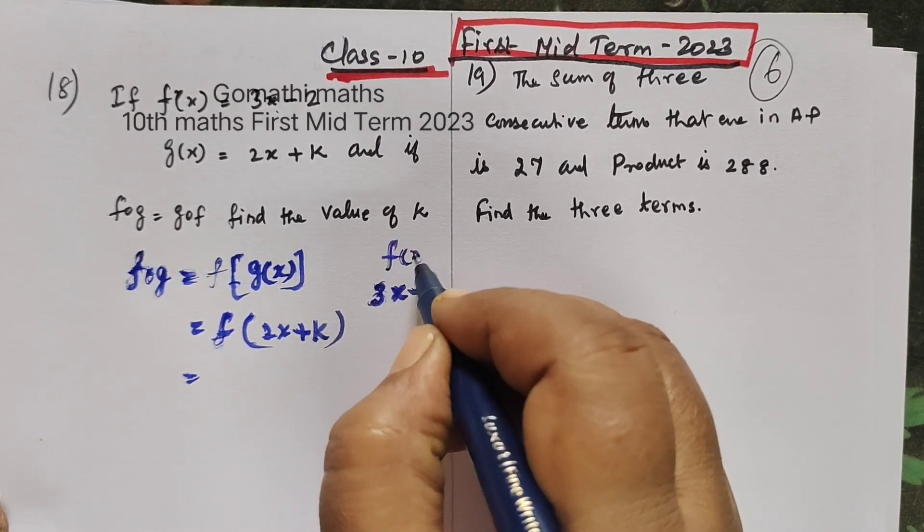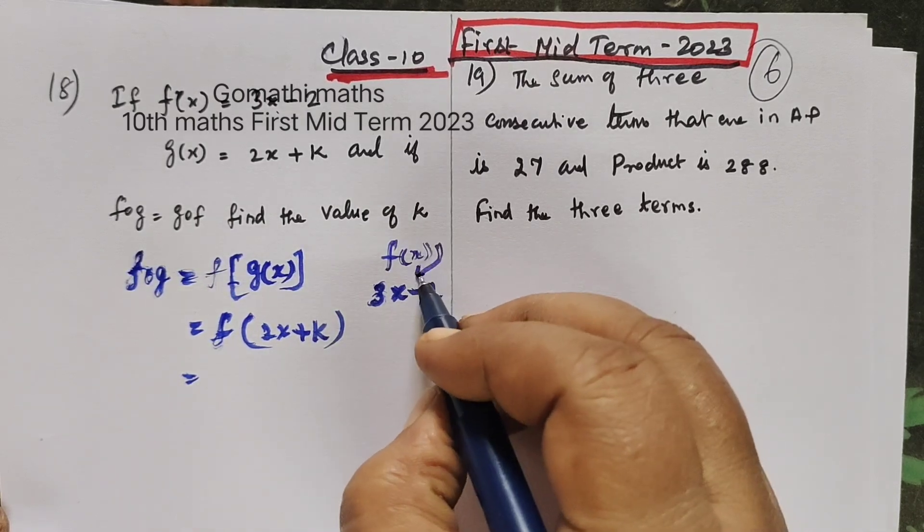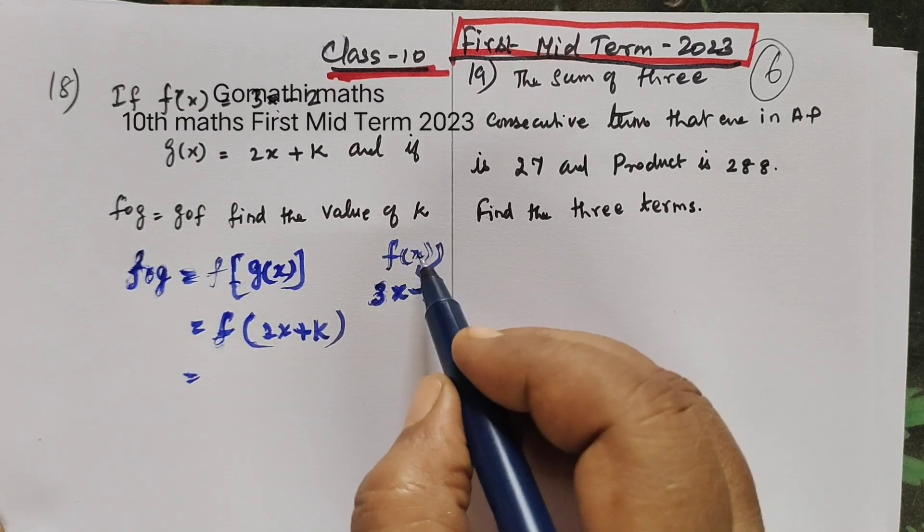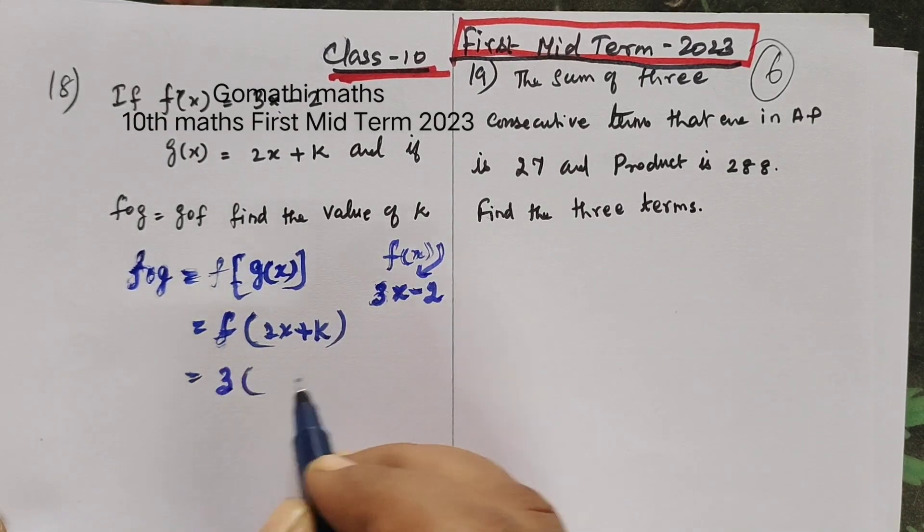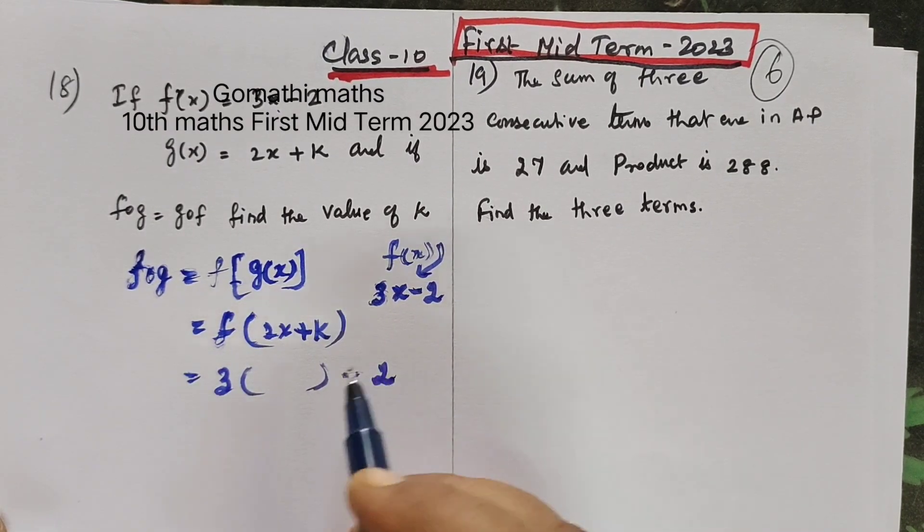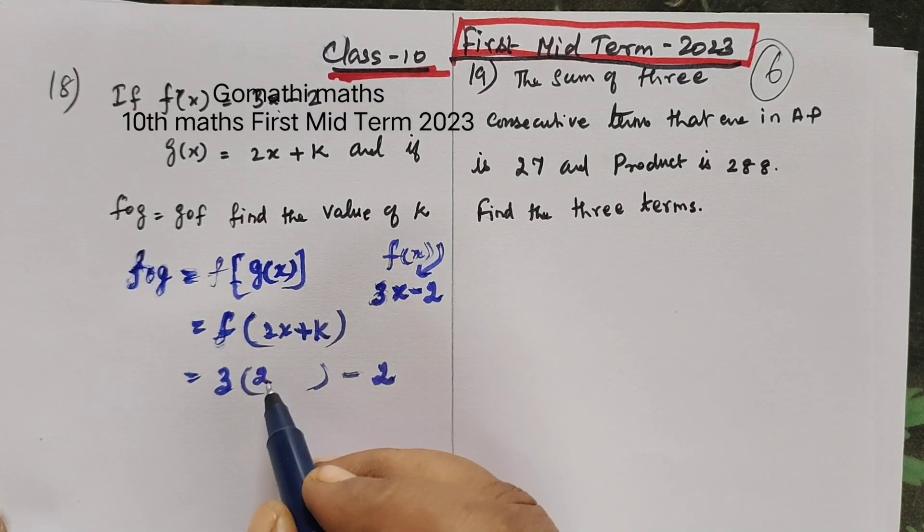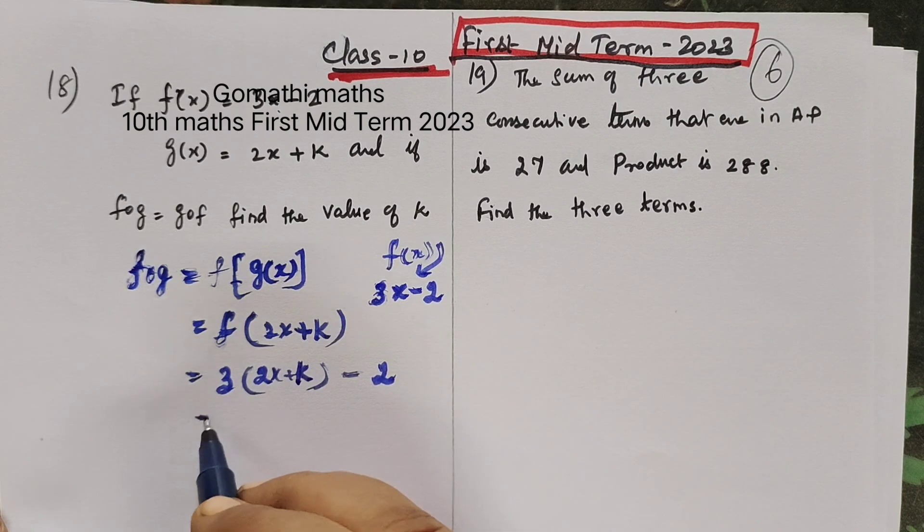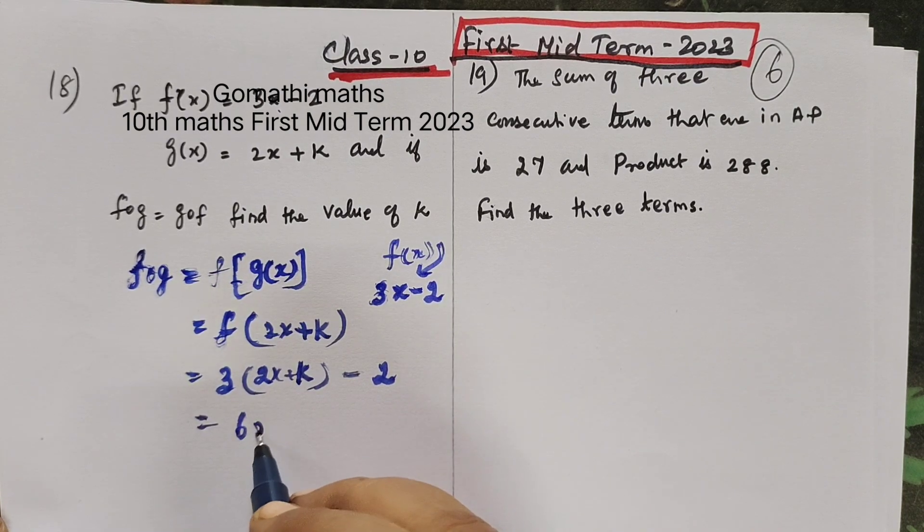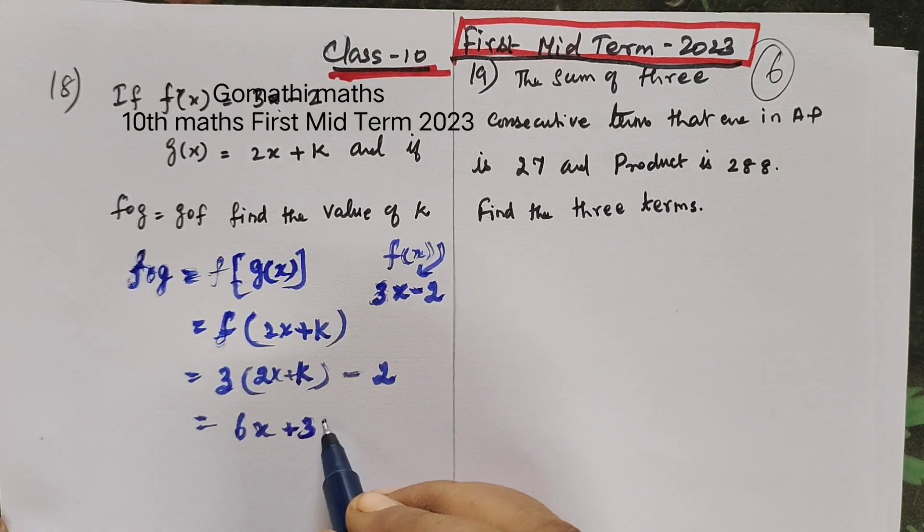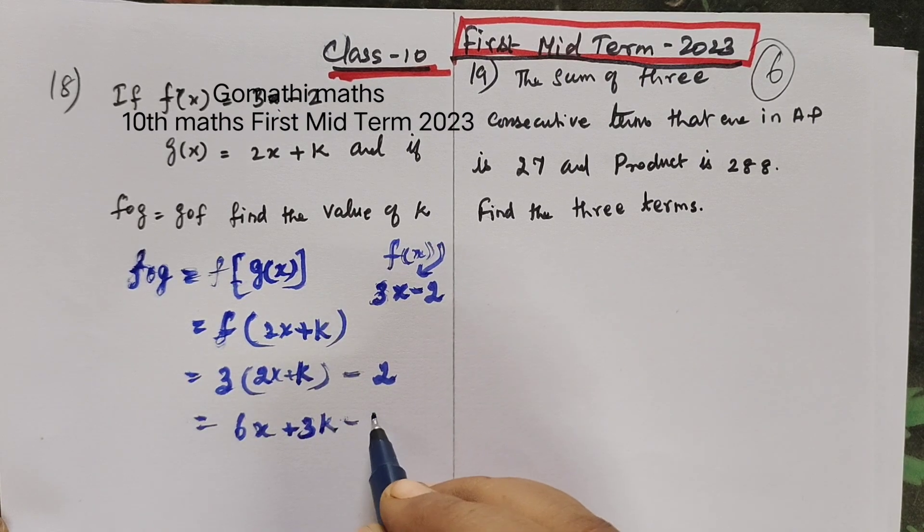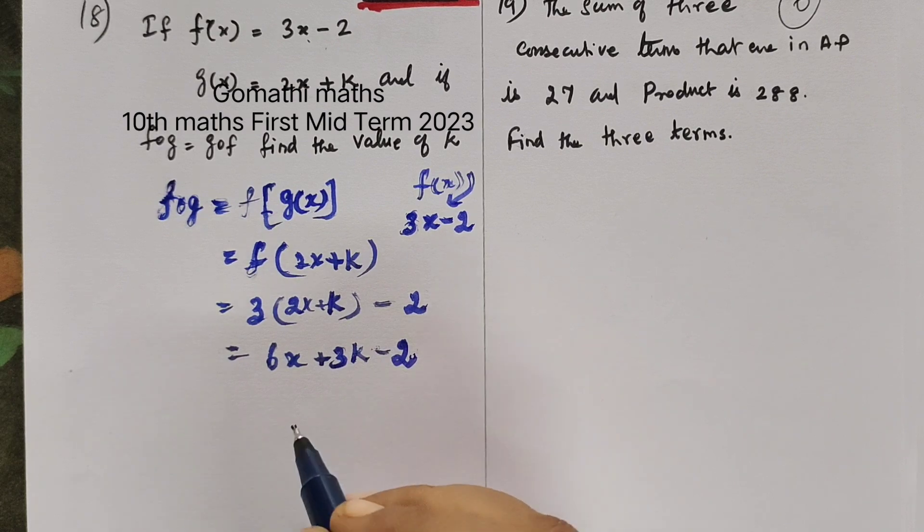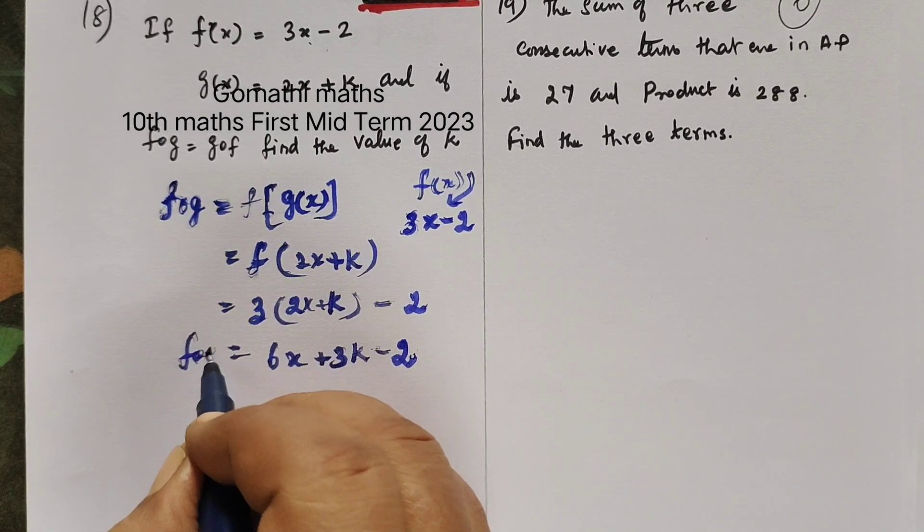This is f(x). So x is 3x minus 2. So x is 3, then bracket minus 2. Here you write 2x plus k. Now take 3 inside. 3, 2s of 6x plus 3k minus 2. This is f∘g.